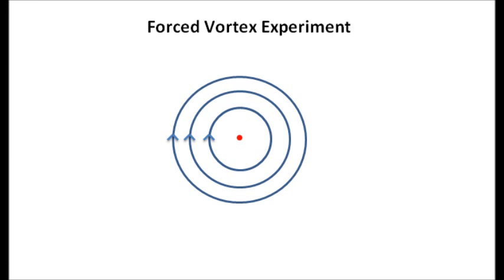Welcome to the Forced Vortex Experiment. A vortex is the revolving motion of fluid around an axis which possesses circular streamlines. There are two types of vortices: a free vortex and a forced vortex.